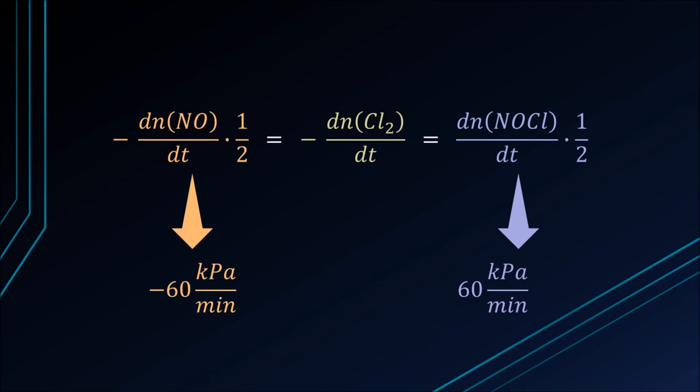If two moles of nitrogen monoxide react with one mole of chlorine, the rate of change of the partial pressure of chlorine has to be half the rate of change of the partial pressure of nitrogen monoxide.